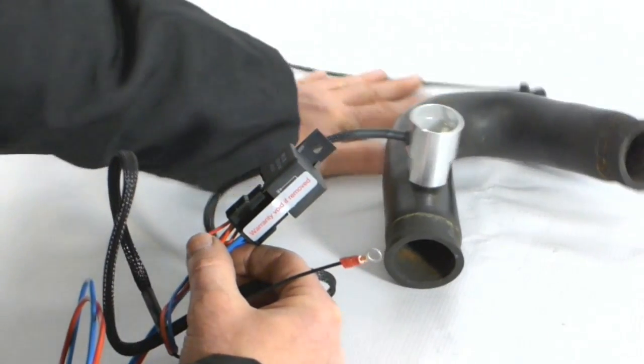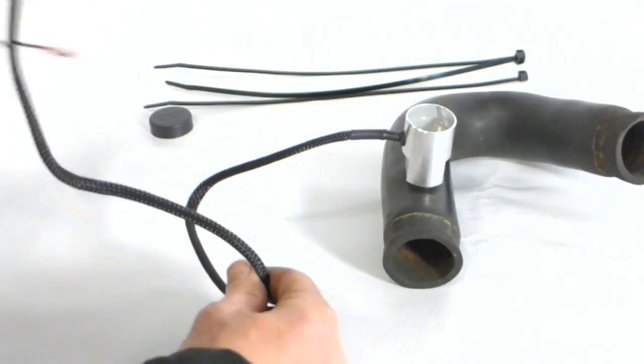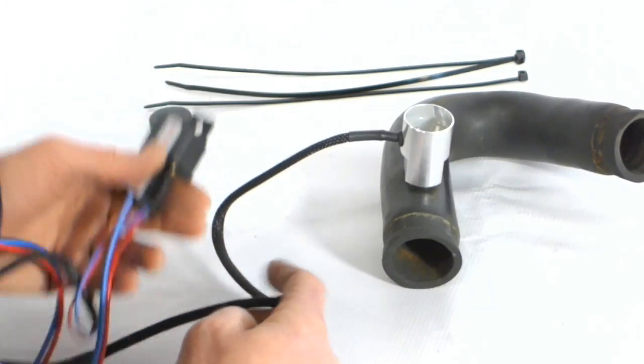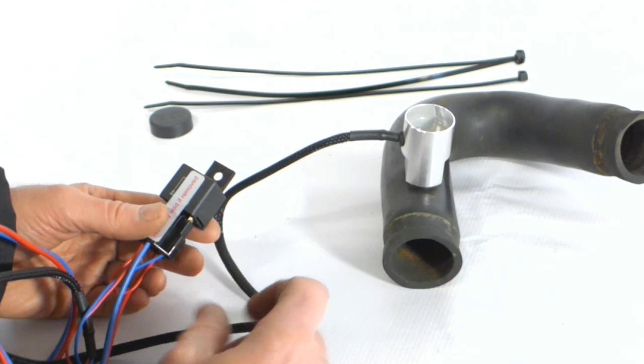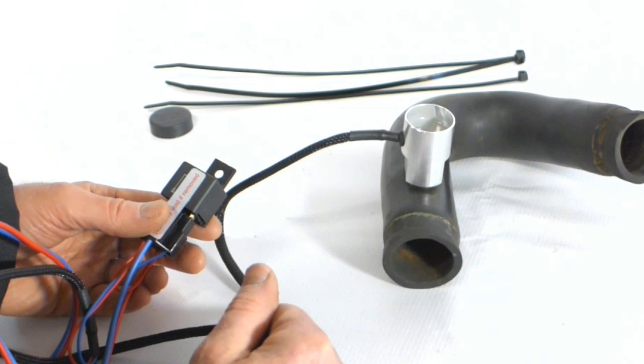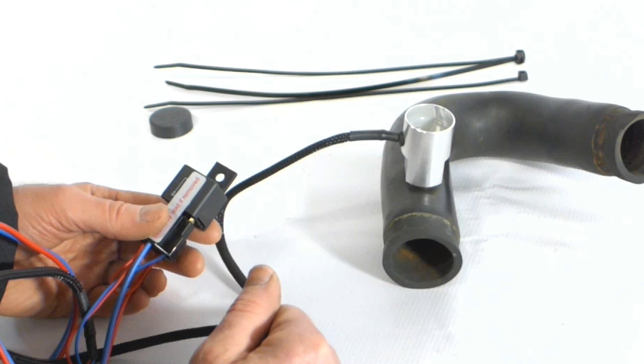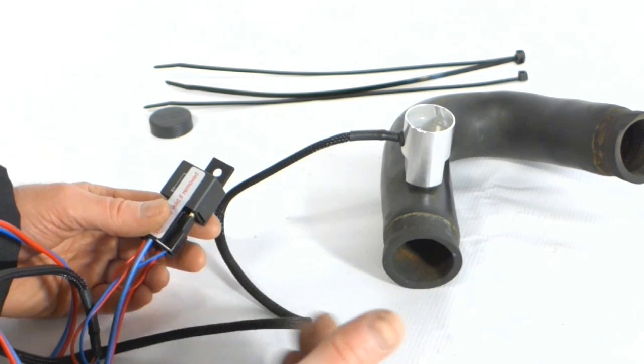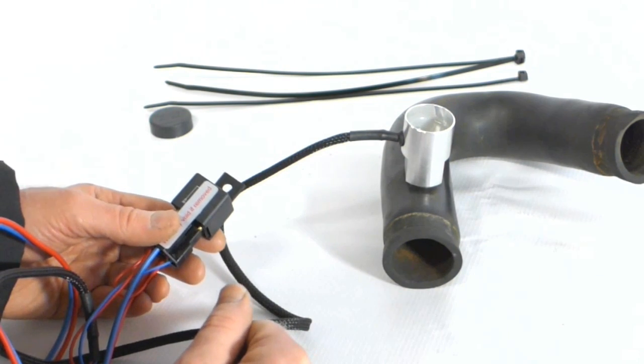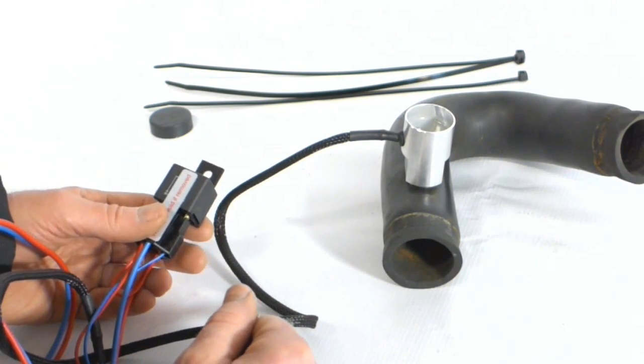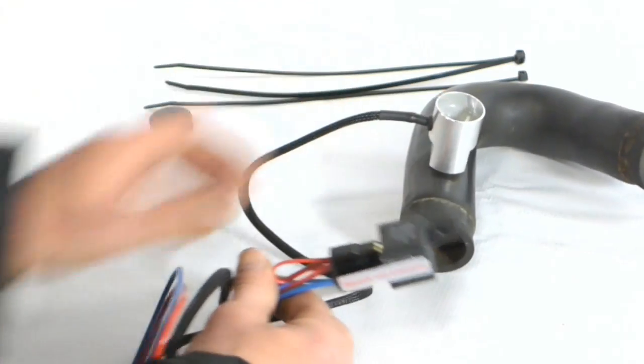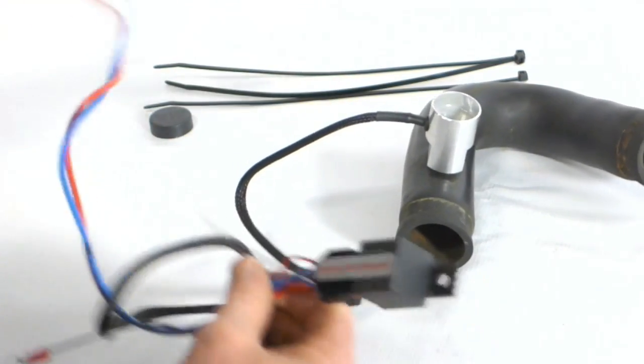The cable ties are with the kit to ensure that when you route the wiring, it's away from any rotating parts like any fan belts, water pump, fan blades, but equally anything hot like the exhaust manifold and any controls such as the accelerator cable or choke cable mechanisms. A nice neat installation is what you're looking for.